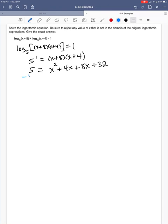So let's see what happens. I'm going to subtract 5 from both sides. I can also combine like terms here and put those together. So I'm going to get x squared, 4x plus 8x is 12x, and then I'm going to get plus 27.